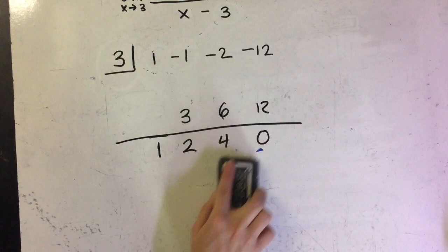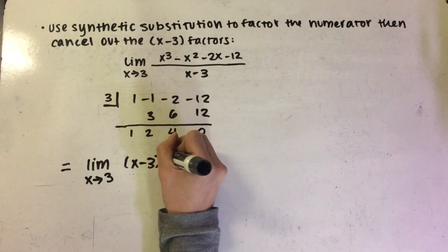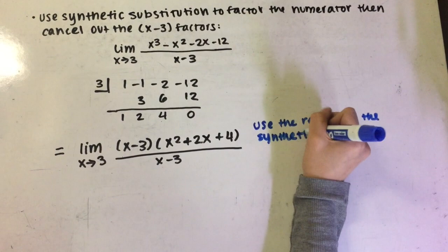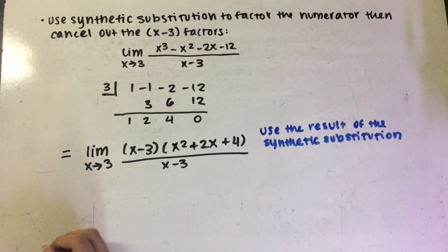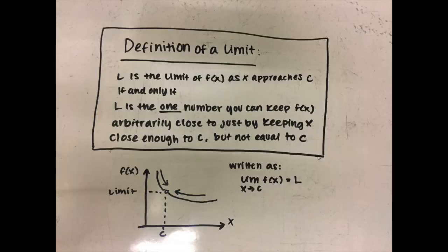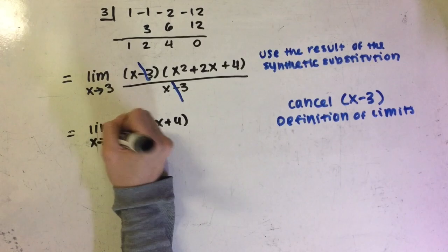The result of the synthetic substitution is x squared plus 2x plus 4. So now, we use the results of the synthetic substitution and write our function like this: the limit as x approaches 3 of x minus 3 times x squared plus 2x plus 4, divided by x minus 3. From here, we cancel out x minus 3 from both the numerator and the denominator. We can cancel out x minus 3 because the definition of a limit says that L is a number you can keep f arbitrarily close to just by keeping x close enough to c but not equal to c — keeping x close enough to 3 but not equal to 3, since 3 is the c in this function.